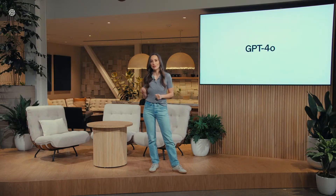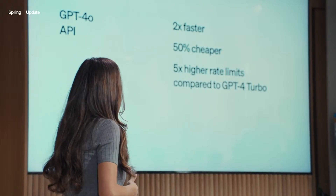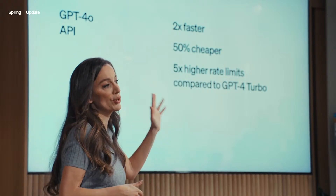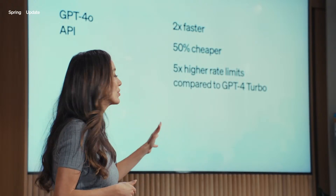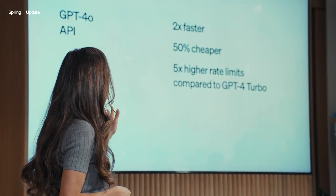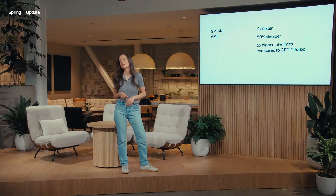OpenAI just released its newest model, GPT-4o, which stands for Omni model. This is actually available through the API, and some of the highlights for me are 50% lower pricing, two times faster latency, and five times the rate limits.